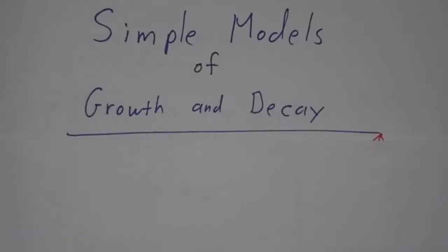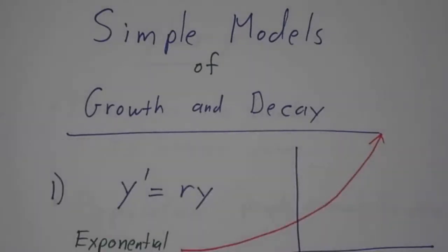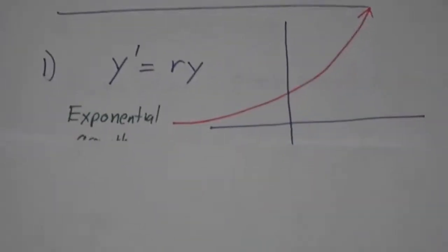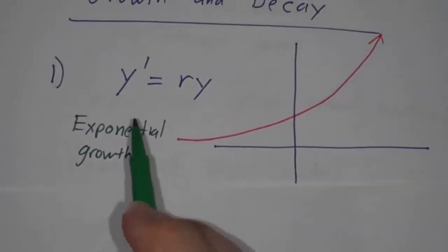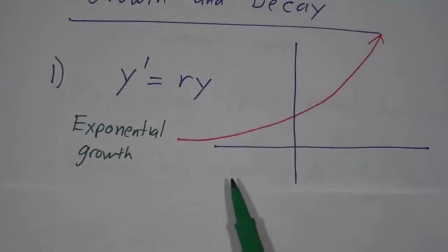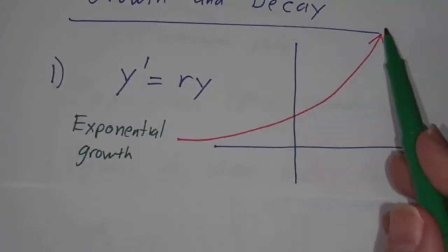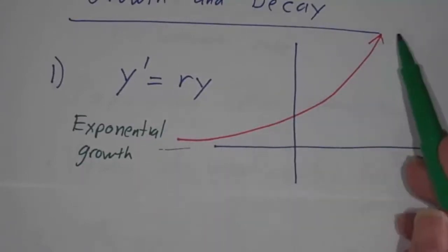In this module, we're going to go over some simple models of growth and decay. The first kind is exponential growth. This is where something grows in proportion to how much there already is, and you wind up having things shooting up exponentially.